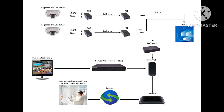IP — Internet Protocol — CCTV. IP CCTV cameras use digital technology to transmit video over an IP network, such as a local area network (LAN) or the Internet. These cameras offer higher resolution and can be connected wirelessly or through wired networks. They often have advanced features like remote access and analytics capability.